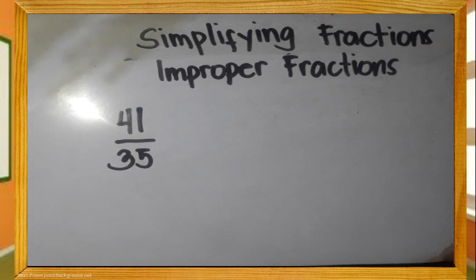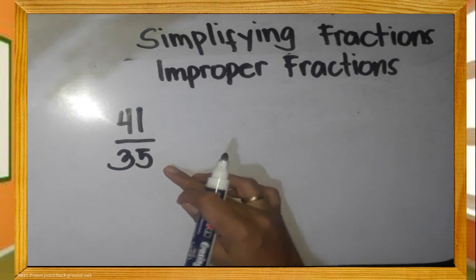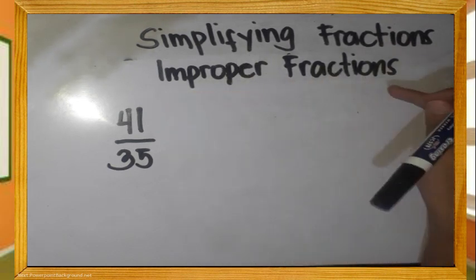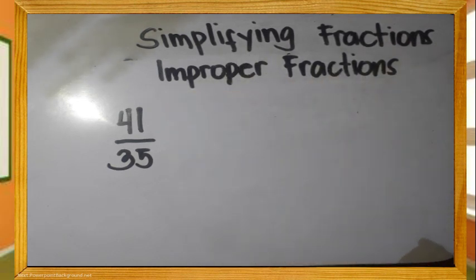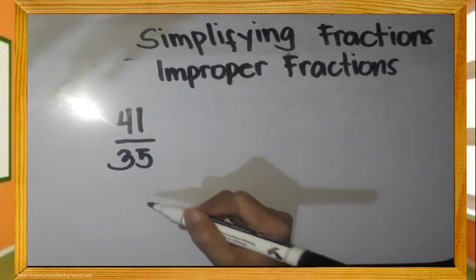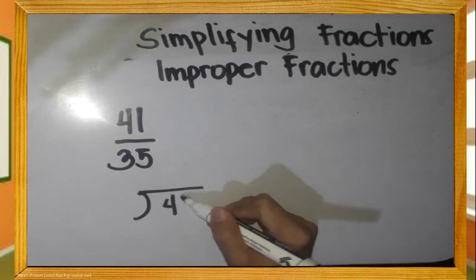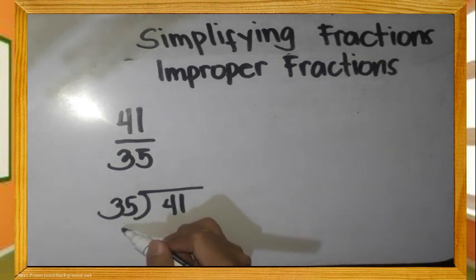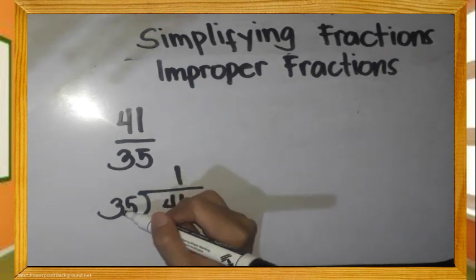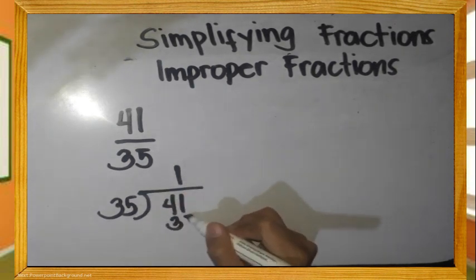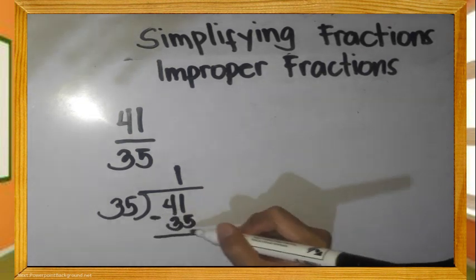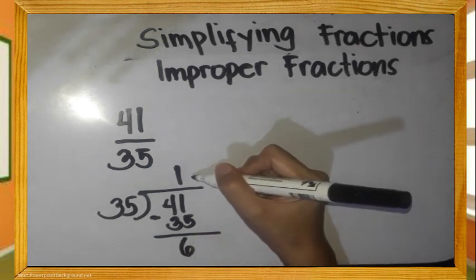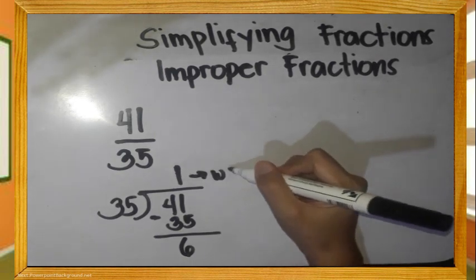Another example, simplifying improper fraction. We have 41 over 35. Mas mataas o mas malaki ang ating numerator kumpara sa denominator, kaya naging improper fraction. How to simplify? Divide natin ang ating denominator sa ating numerator. 41 divided by 35 is 1. 1 times 35 is 35. Let us subtract: 41 minus 35 is 6.